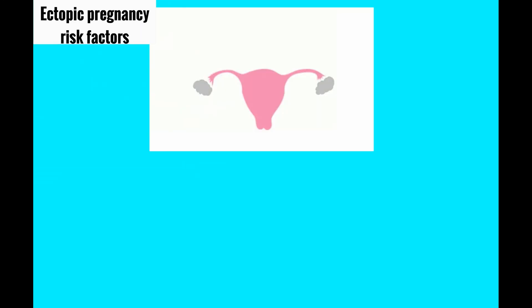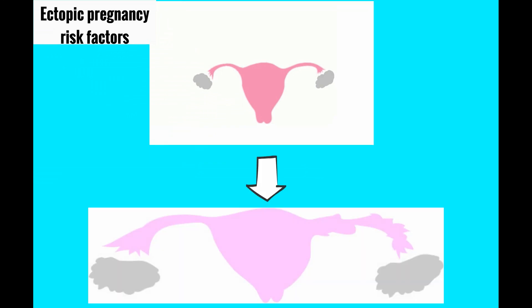Let's discuss ectopic pregnancy risk factors. As we discussed earlier, 98 percent of ectopic pregnancies are located in the fallopian tube. Here's a normal fallopian tube. What risk factors would result in this fallopian tube becoming scarred and damaged, like this illustration here?